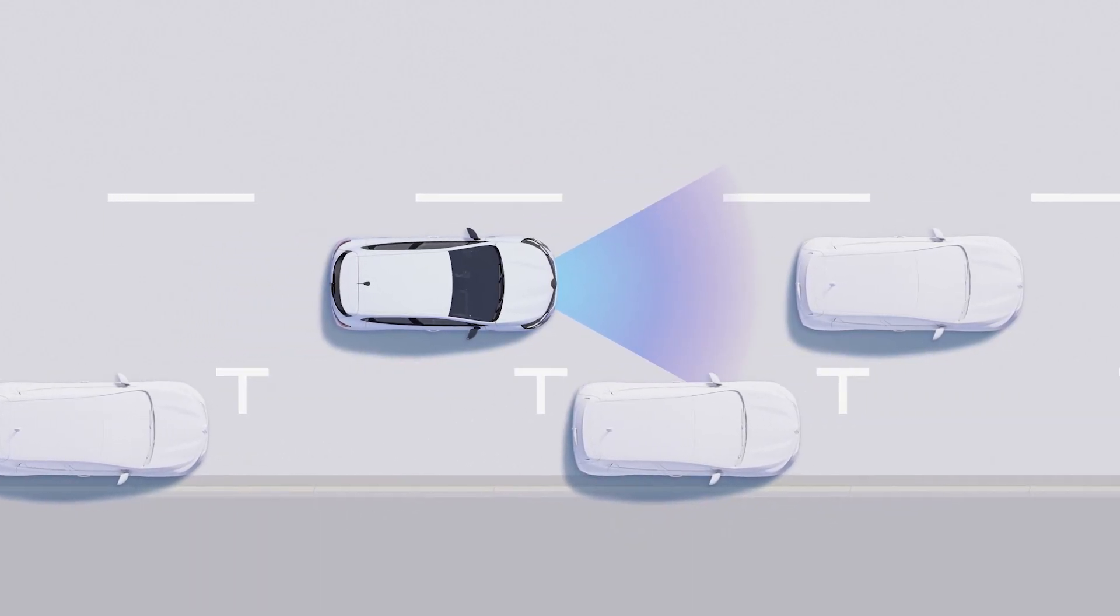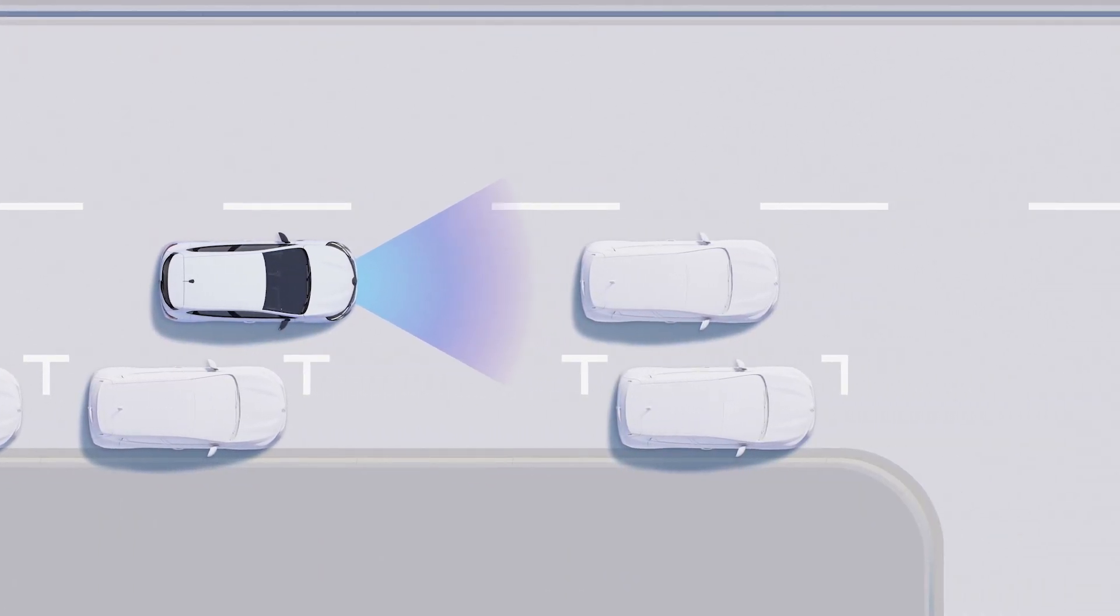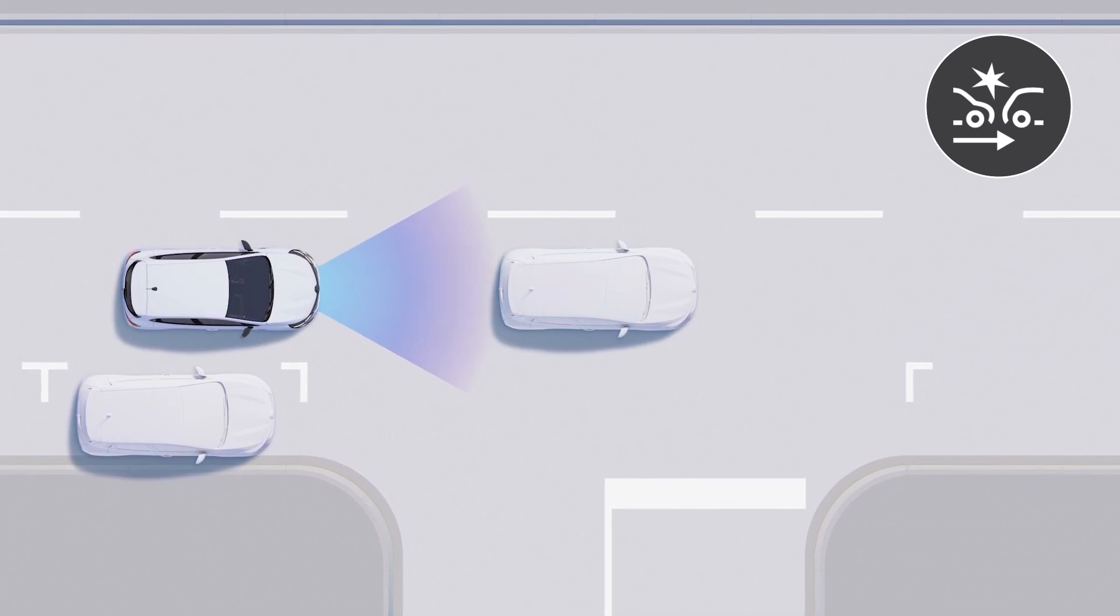If you do not brake or take evasive action despite the audible and visible warning, active emergency braking is triggered and the vehicle brakes, coming to a complete halt if necessary.